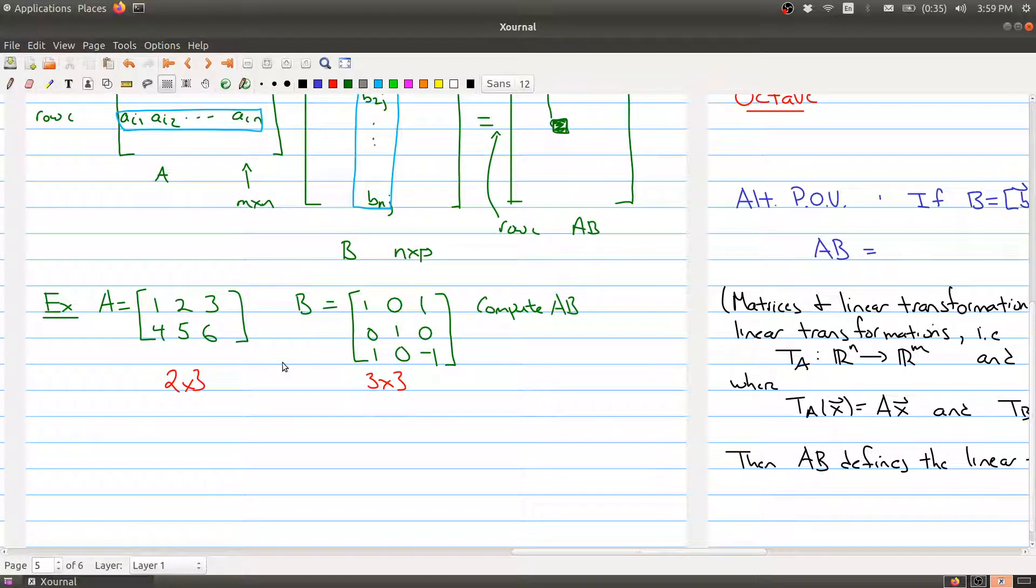So where we left off was we were looking at an example of multiplication of matrices. So I gave you two matrices, A and B, and I had formally defined the way to multiply two matrices together, and I asked you if you could compute A times B without seeing an example first.